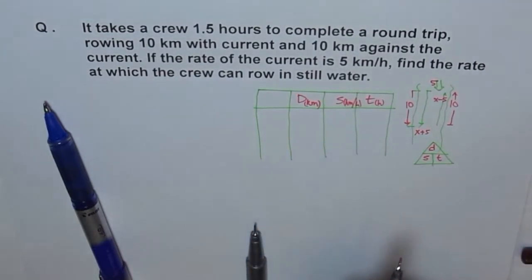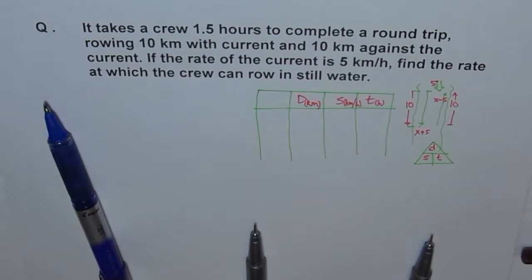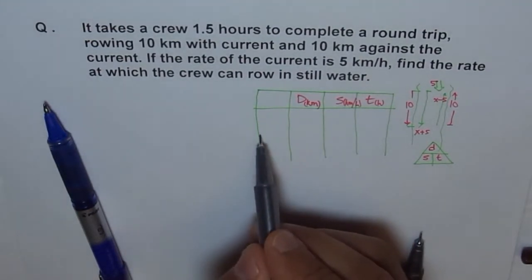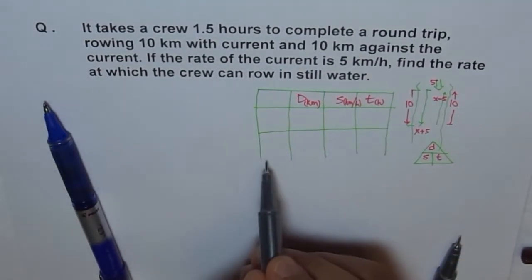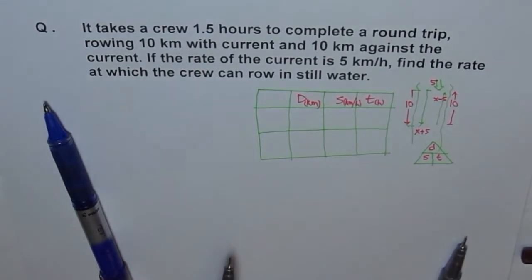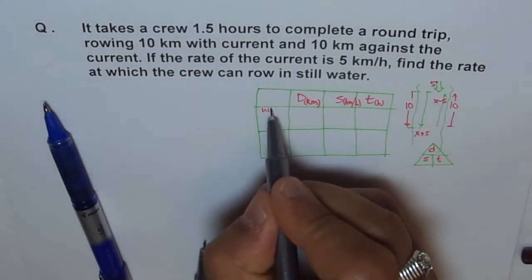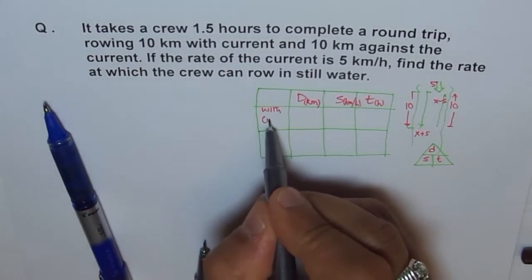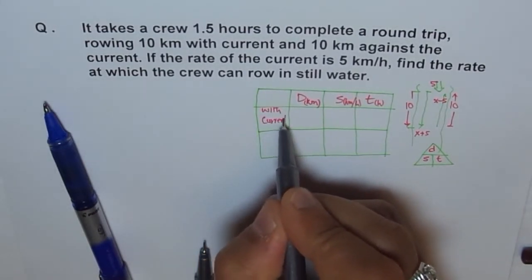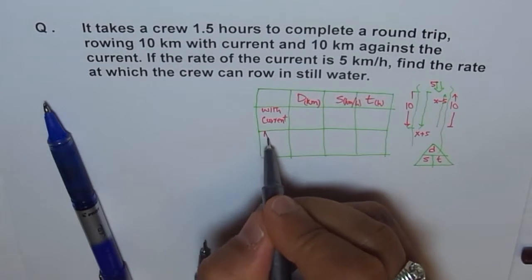And you can write units also here. It is always good to write units. For example, distance in kilometers, speed in kilometers per hour, and time in hours. Is that okay? And then, we have two sections here. We can divide our table into two sections saying one is with the current and the other one is against the current.